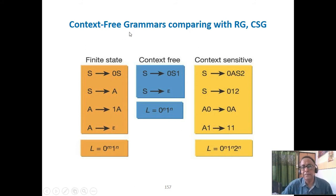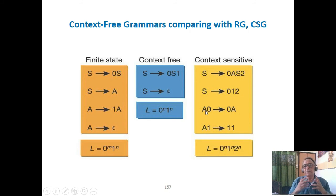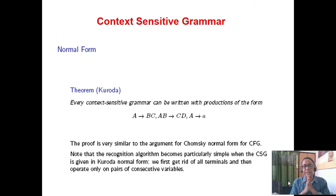Context-sensitive grammar always generates this kind of thing. Two examples: A to the power N, B to the power N, C to the power N (or 0^N, 1^N, 2^N) and the WW grammar. Why is it called context-sensitive? We cannot generate this string with just a variable alone — the variable should have some other variable or terminal on at least one side. That means it should have context. That is the reason it is called context-sensitive.